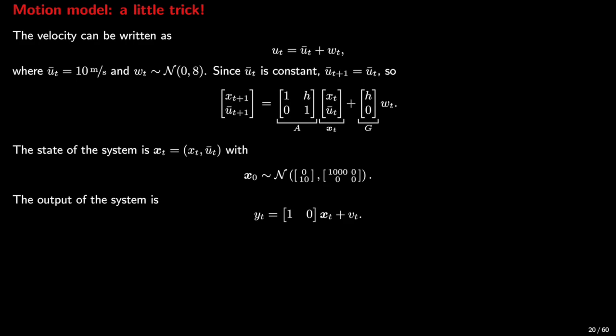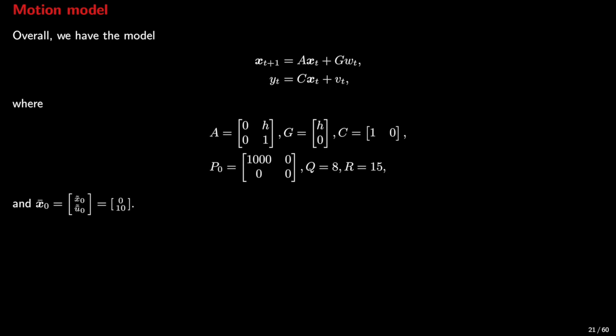The state of the system is now x-bold-face, which comprises of x and u bar, and the initial state, x-bold-face at time 0, follows the normal distribution with this mean and this variance. Since we only measure the position and not the velocity, this is the output equation in terms of x-bold-face. This leads to the linear dynamical system shown here.